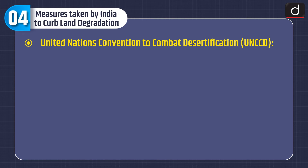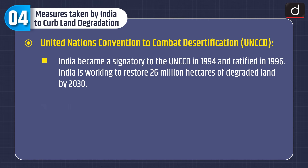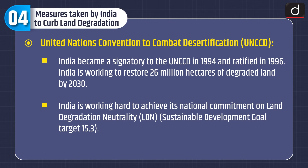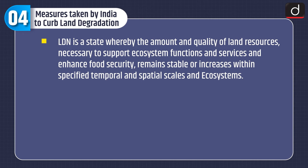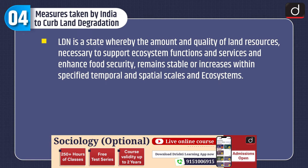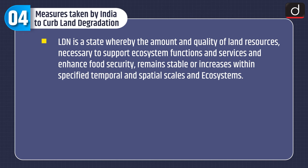Third is the United Nations Convention to Combat Desertification, i.e. UNCCD. India became a signatory to the UNCCD in 1994 and ratified it in 1996. India is working to restore 26 million hectares of degraded land by 2030 and is committed to achieving land degradation neutrality under Sustainable Development Goal target 15.3. LDN is a state whereby the amount and quality of land resources necessary to support ecosystem functions and food security remains stable or increases within specified temporal and spatial scales.